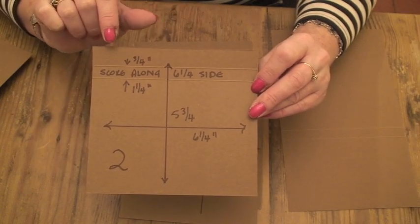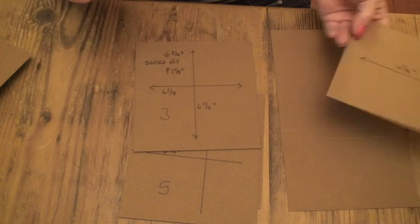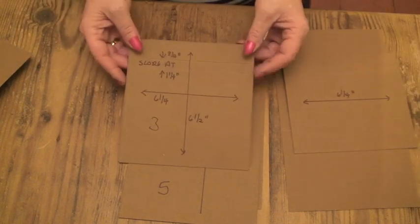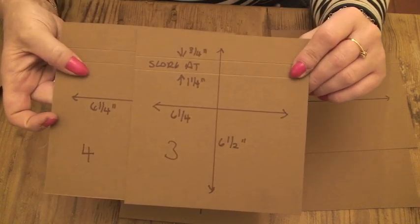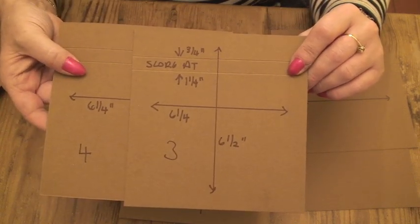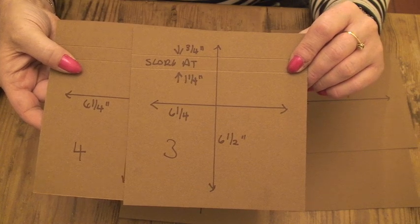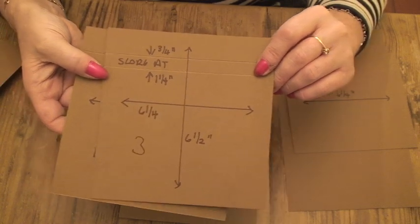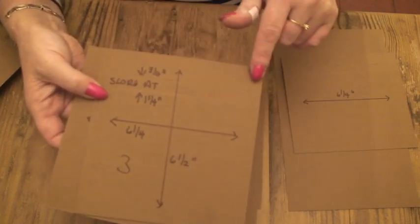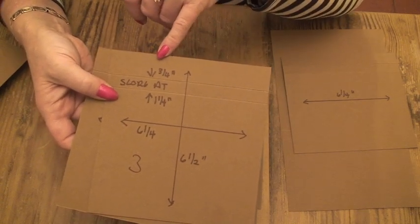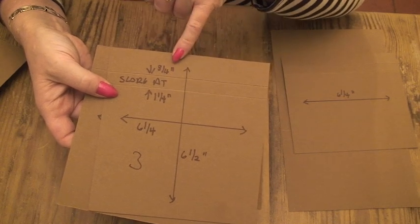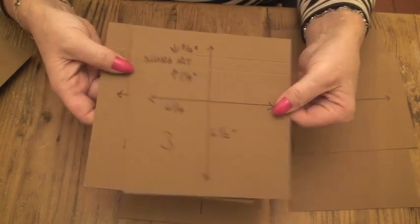Piece three and four are the same, it's two of these, so they are 6¼ inches wide by 6½ inches long and again across the 6¼ inch side I've scored at ¾ of an inch and 1¼ inches, so do two of those.